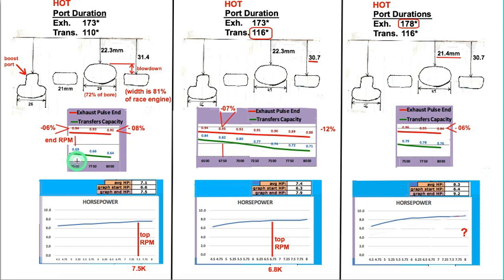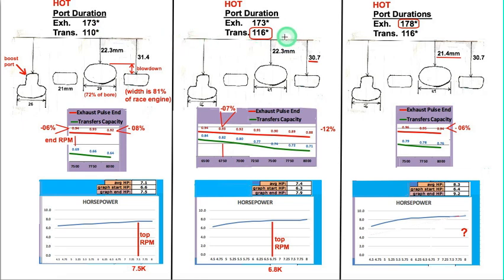I wanted it to rip higher than 7500 RPM — my target is eight thousand. Knowing that the transfers are limited in width, I raised them, increasing the transfer duration from 110 to 116 degrees. Unfortunately, that gave me less peak RPM — it gave 6800 RPM, which at 6800 RPM shows a seven percent overlap.